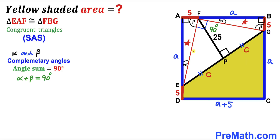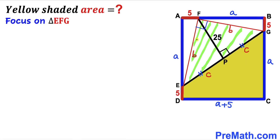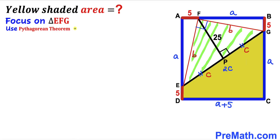Since these two triangles are congruent, side length EF equals side length FG. Let me label this side as lowercase b, so this side is b as well. Now let's focus on right triangle EFG — this is an isosceles triangle since EF equals FG. The whole EG length is going to be c plus c, giving us 2c.